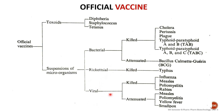Viral vaccines are again classified into killed viral vaccines — examples include influenza, measles, poliomyelitis, and rabies — and attenuated viral vaccines, which include measles, poliomyelitis, yellow fever, and smallpox. This completes the conventional classification of vaccines.